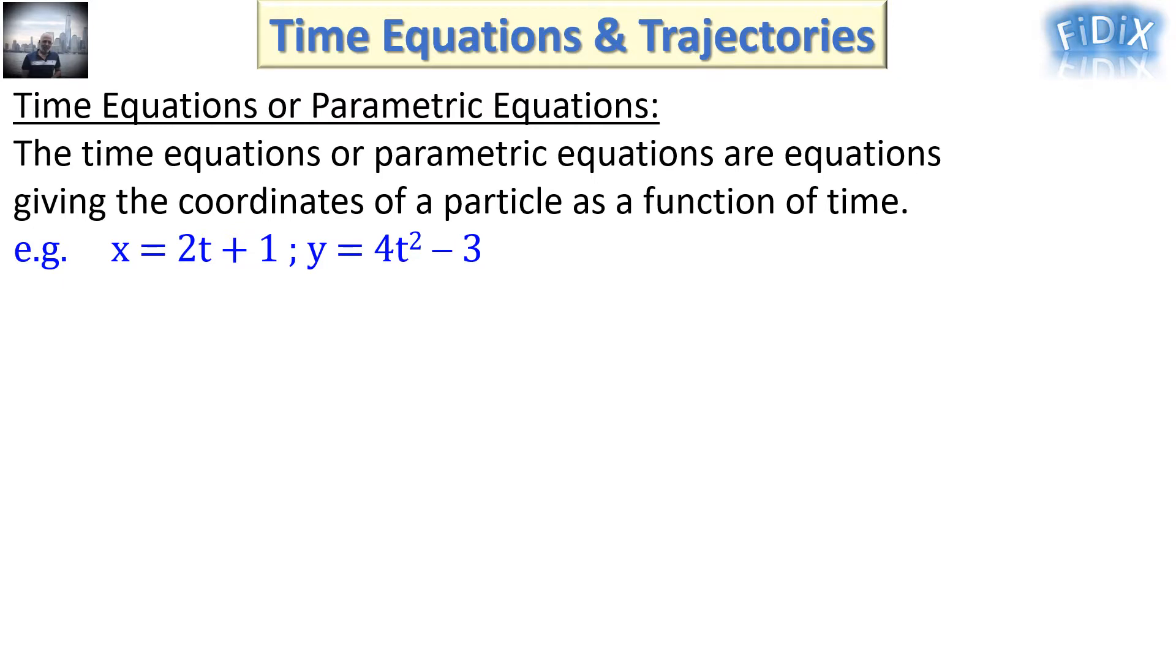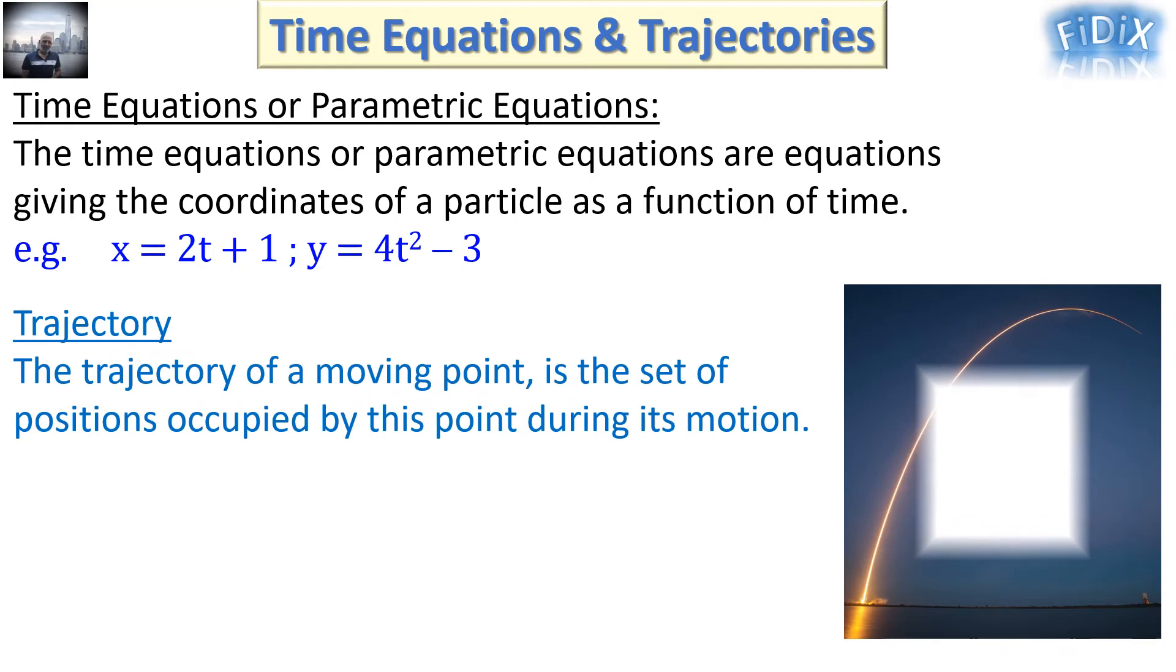Time equations or parametric equations are equations giving the coordinates of a particle as a function of time. For example, x equals 2t plus 1 and y equals 4t squared minus 3.